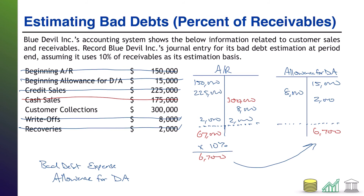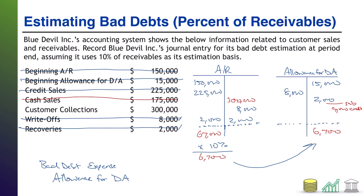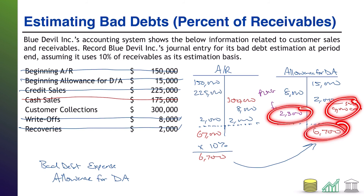The subtotal in the allowance account is still the same — $9,000 credit — because nothing else changed. Notice we have more than we need: we're at $9,000 already in the allowance account but we only need $6,700. So in this case we are actually going to take some allowance away. Specifically, we're going to take $2,300 of it away by debiting allowance for doubtful accounts $2,300. That's the plug — $9,000 minus $2,300 gets us to $6,700.